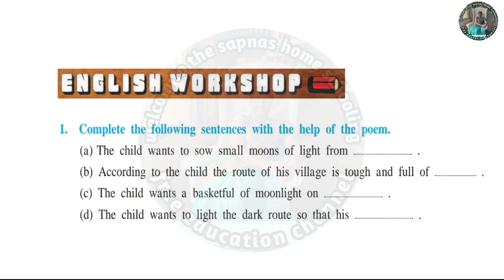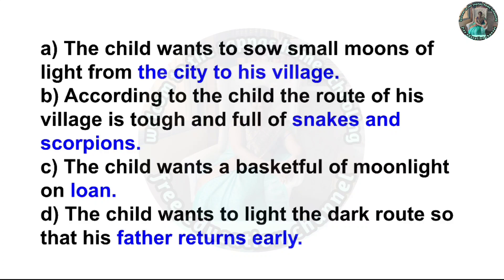Question 1: Complete the following sentences with the help of the poet. A. The child wants to sow small moons of light from the city to his village. B. According to the child, the root of his village is tough and full of snakes and scorpions. C. The child wants a basket full of moonlight on loan. D. The child wants to light the dark roots so that his father returns early.